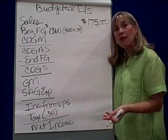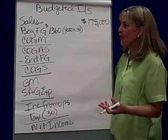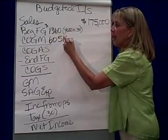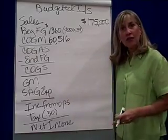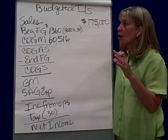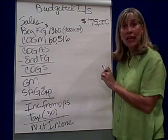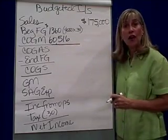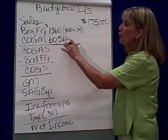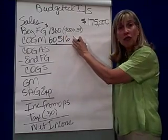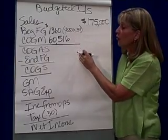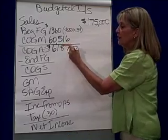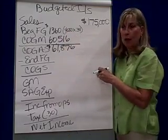Cost of goods manufactured — that was the last schedule we just did — we said was $60,516. So $60,516 is our cost of the goods we hope to produce in the next year. That means cost of goods available for sale would be the beginning finished goods cost plus the cost of goods manufactured. So COGAS would be $61,876.